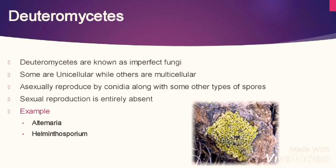The last division is Deuteromycetes. Deuteromycetes are known as imperfect fungi because they are considered an artificial class of fungi in which the sexual or perfect stage is absent in the life cycle. Therefore, they are called imperfect fungi. Some are unicellular while others are multicellular. They reproduce asexually by conidia along with some other types of spores. Sexual reproduction is entirely absent. The asexual stage in Deuteromycetes is well defined. Examples of Deuteromycetes include Alternaria and Helminthosporium.